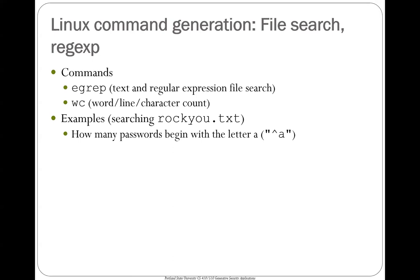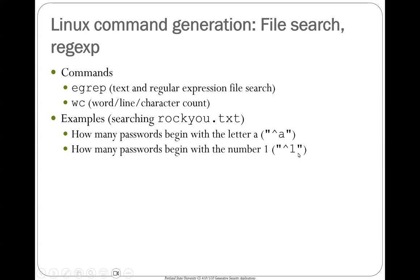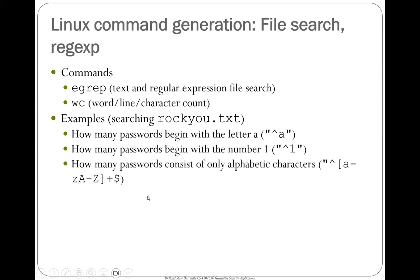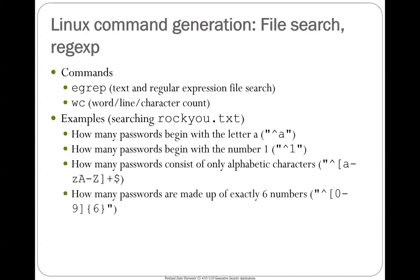The first example is how many passwords begin with the letter A — you use the caret to match the beginning of the line. This is one password per line in the data dump, so you match the beginning and the first character after it is A. Passwords that begin with the number one is the same thing with one instead of A. How many passwords consist of only alphabetic characters? From the beginning of the password, you only want lowercase or uppercase letters, the plus character means one or more of those in a row, followed by the end-of-line character which is the dollar sign.